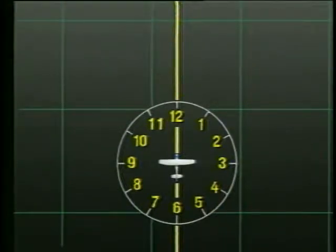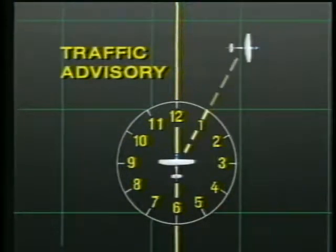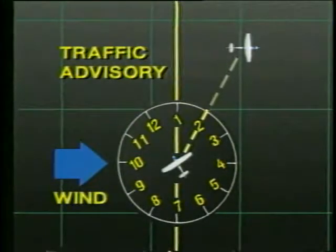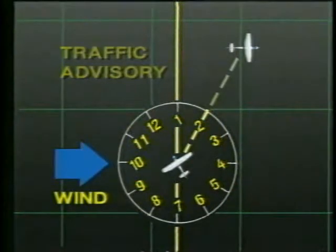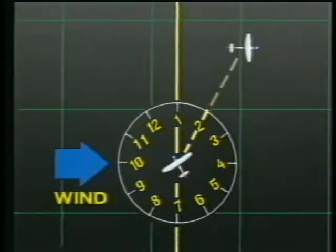When a controller issues a traffic advisory, it is given in relation to a twelve-hour clock with twelve o'clock aligned with your ground track. For example: 'Cessna 7 4 Zulu, traffic one o'clock, two miles, Cessna, seven thousand five hundred, eastbound.' If you are turned into the wind to maintain your ground track, the actual location of the traffic may be different than that given by the controller — in this example the traffic is actually at your two o'clock position. When trying to locate reported traffic, consider your ground track and encompass a wider range in your scan. Let the controller know whether or not you have spotted the traffic. If you don't see it, tell the controller 'negative contact' and continue to look. Keep in mind that traffic advisories do not relieve you of the responsibility of maintaining your normal scan for collision avoidance.